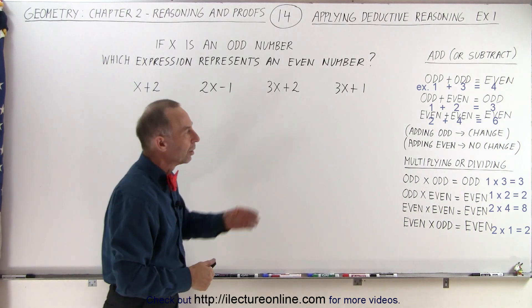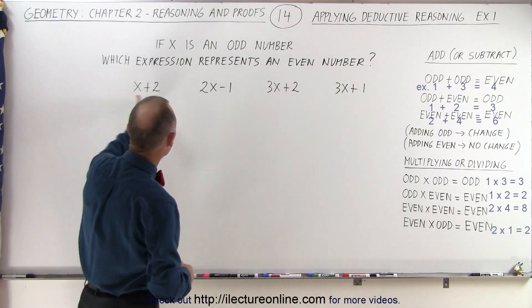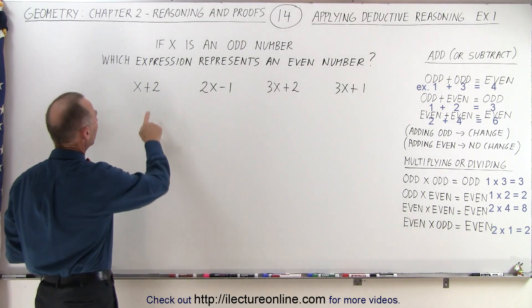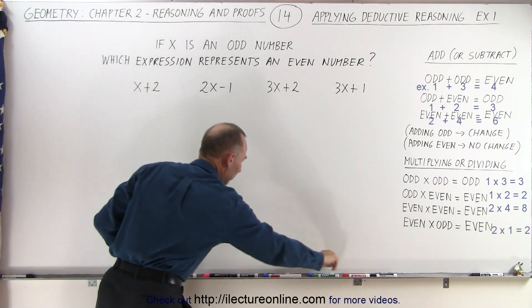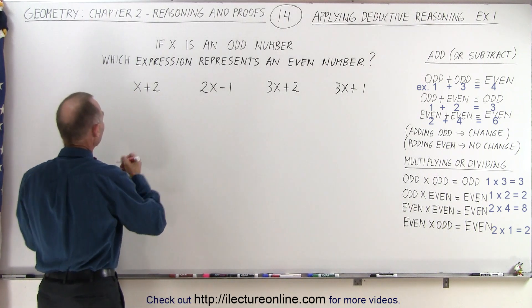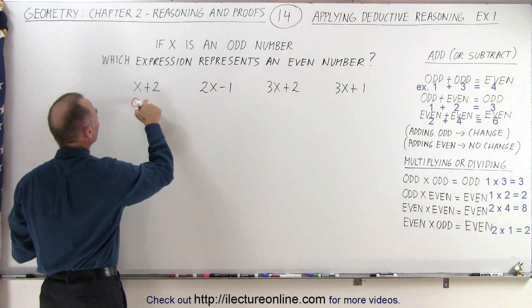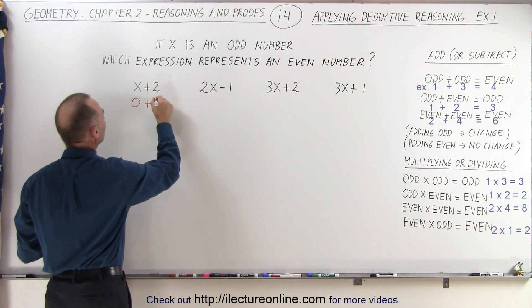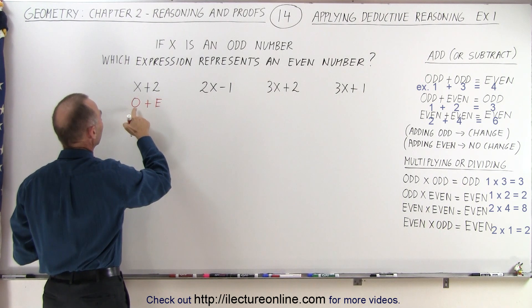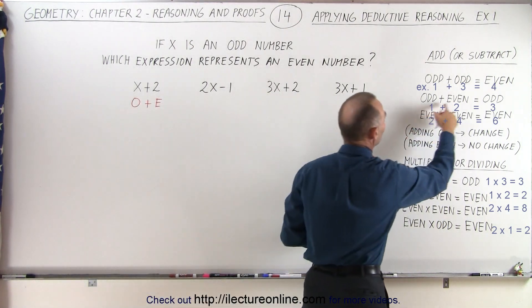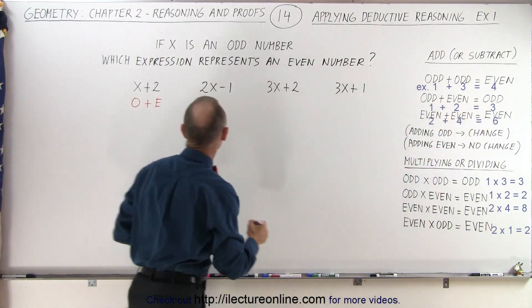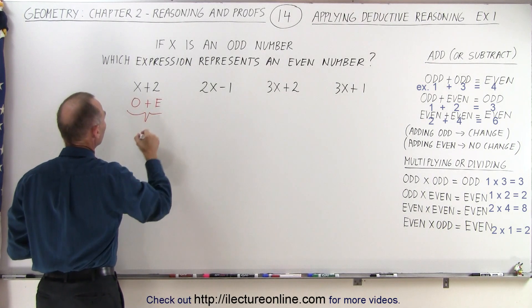So let's try now using the rules to these four expressions. So here, we're going to take a number which is odd, and so let's go ahead and label them. So now x is going to be odd, and we're going to add plus an even number. So what happens when we take an odd number and we add an even number? The rule says that we still get an odd result. So together, this will be odd.